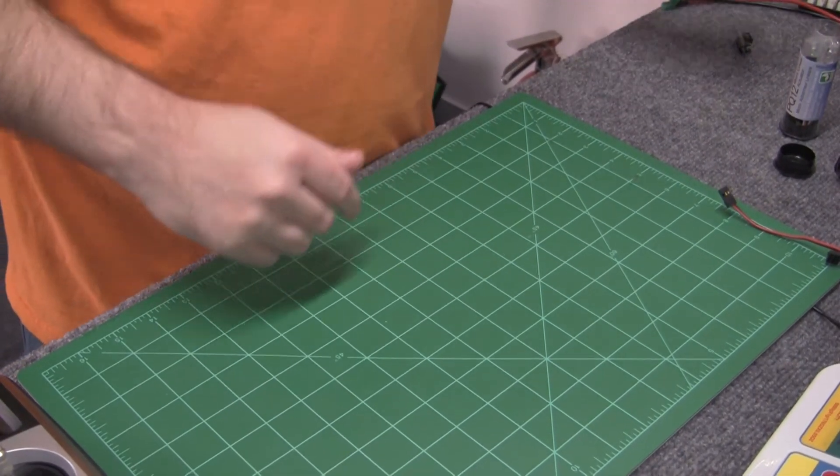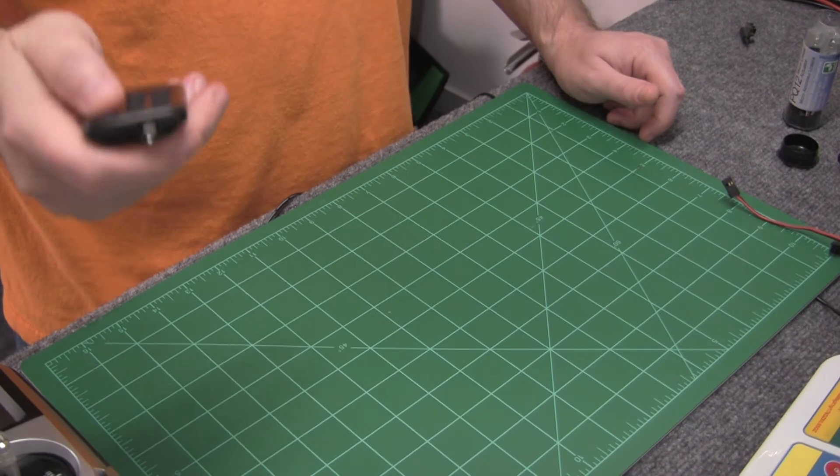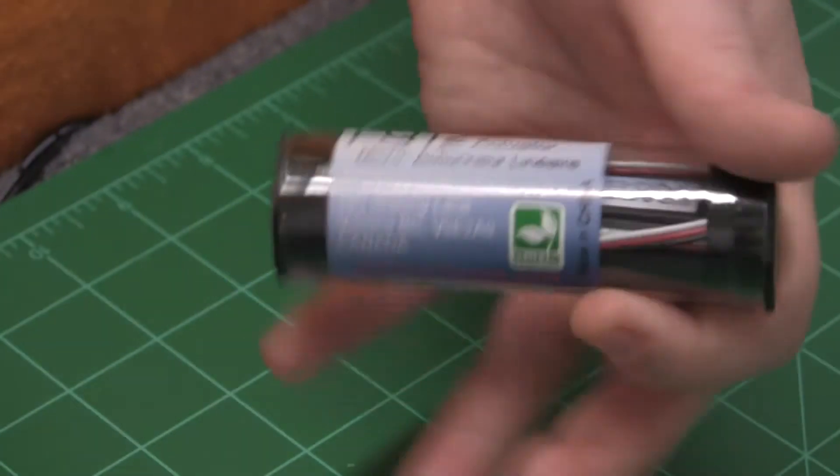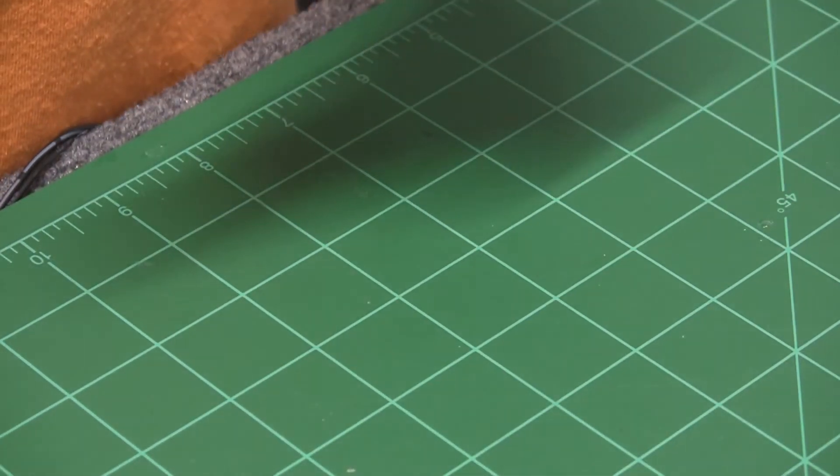Alright. So, where's my remote? Found my remote. Alright, so this is what you get. A little plastic container for this size, for the PQ-12 anyways.